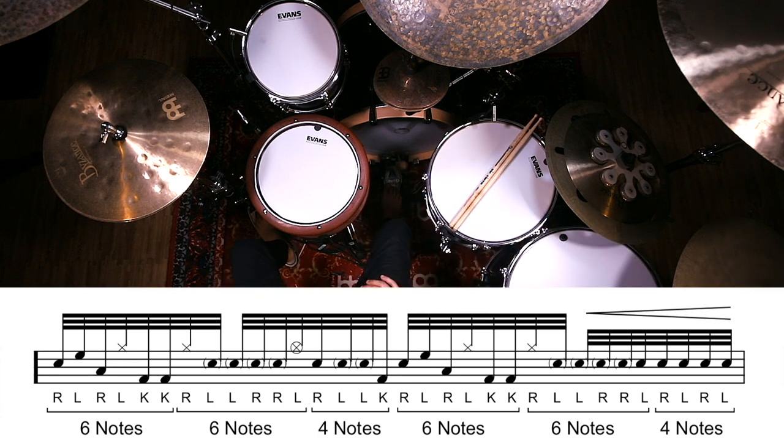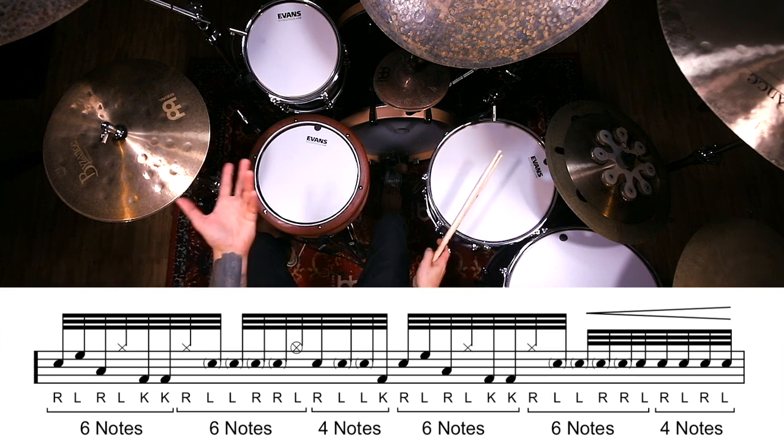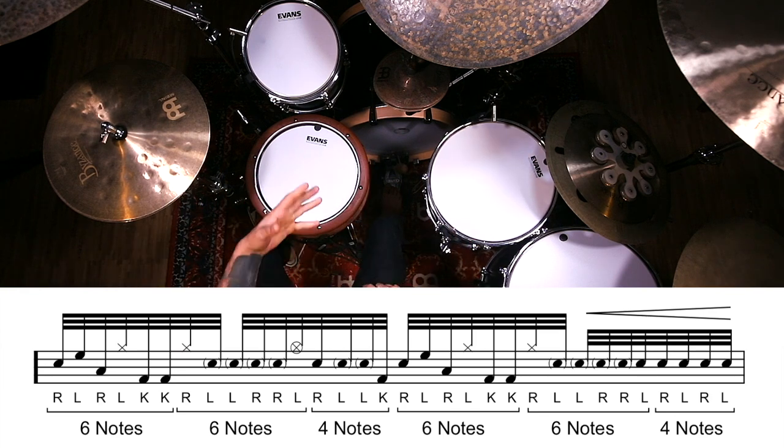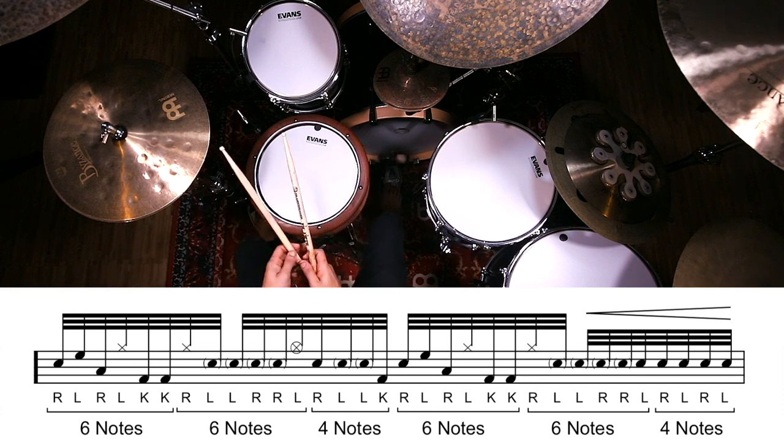So to start out we have a six note grouping of right, left, right, left, kick, kick. This is a really common or useful rock or metal pattern. But the way we're orchestrating it makes it pretty tricky. So just kick and snare. Our pattern would sound like this.